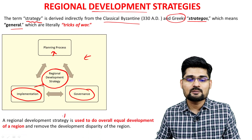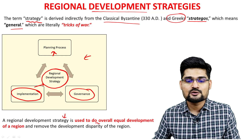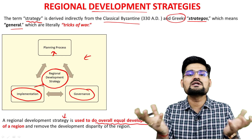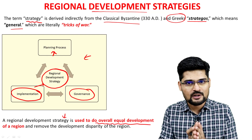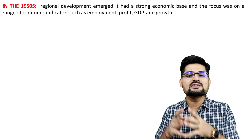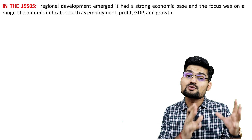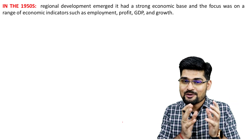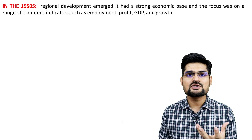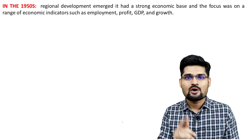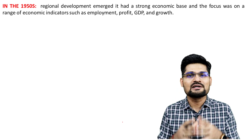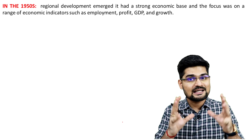A regional development strategy is basically used to achieve overall equal and sustainable development of a region. Observing the trajectory of regional development strategies since World War II, it is very interesting to see how approaches have changed. In the 1950s, the basic approach was an economic one — only one discipline dominated the idea of strategies for regional development, and that was economics.